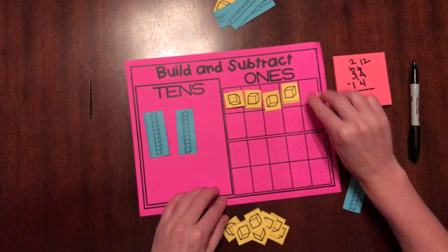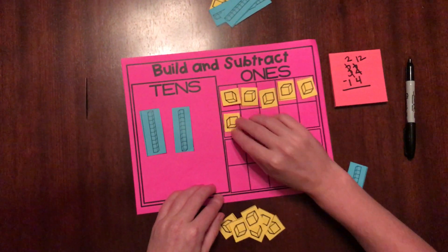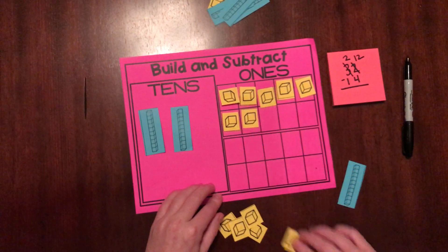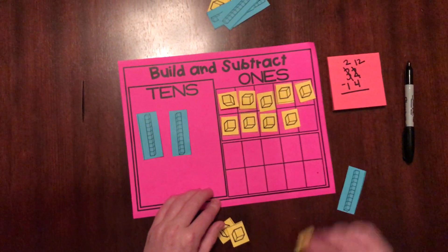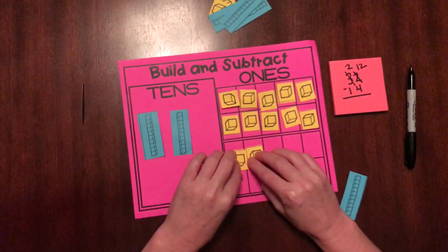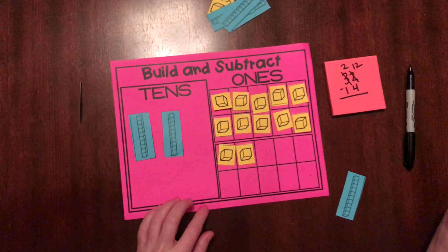On the grid, you can really see the making of ten. You don't have to have the grid. You could just use a regular TO chart. Either one works. So now you'll see that I have 12 ones, just like my problem says.